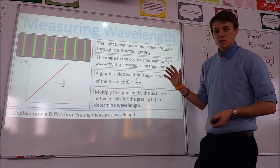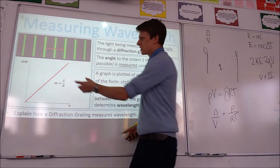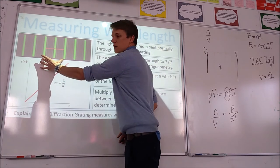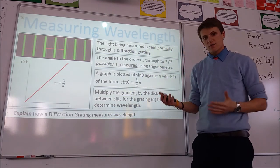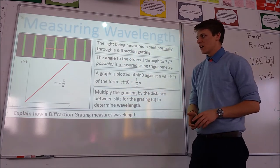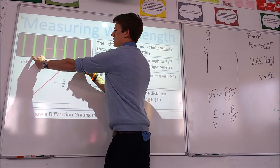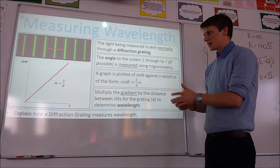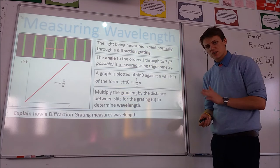Just a quick note on this, because it's one of the required practicals. It will be better, instead of measuring the angle between 0 and 1, to measure the angle between 1 and 1 on each side, which is a bigger angle, then divide by 2. Measuring bigger things has a smaller percentage uncertainty, so that's always going to be better. Likewise, when finding the angle for n equals 2, measure between 2 and 2 and then divide by 2, giving you the angle between the second order and the zeroth order.